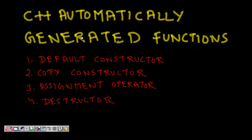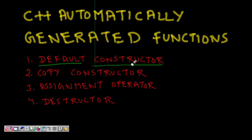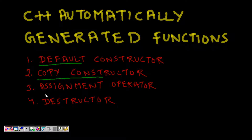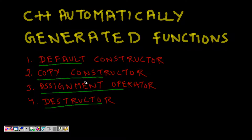In this lecture we are going to study about the functions that get generated automatically by C++. Even if you don't write these functions, they are automatically generated by default. So what are they? They are the default constructor, copy constructor, assignment operator, and destructor. The constructor and destructor are needed for initialization and destruction.